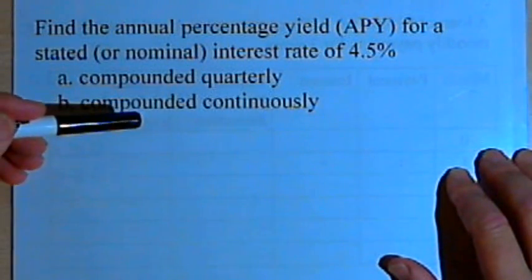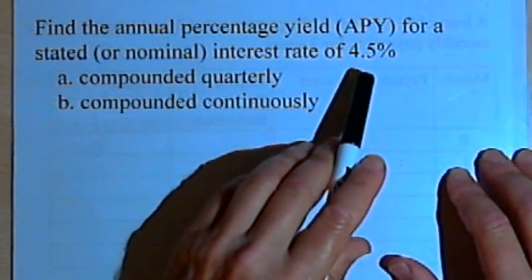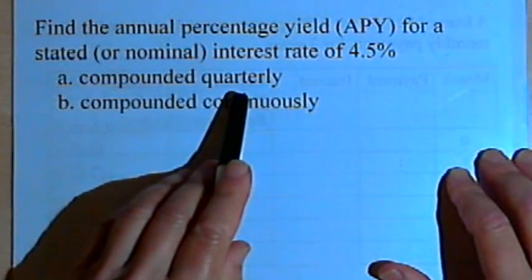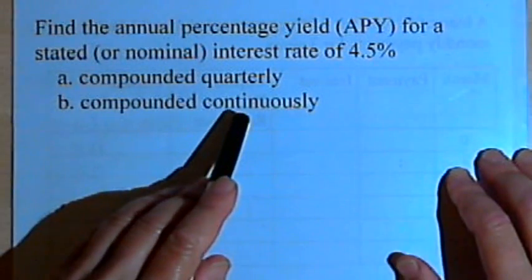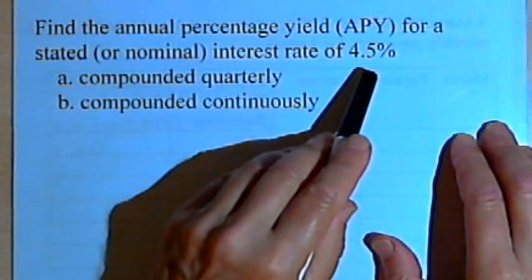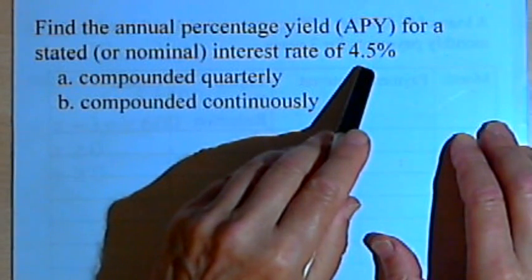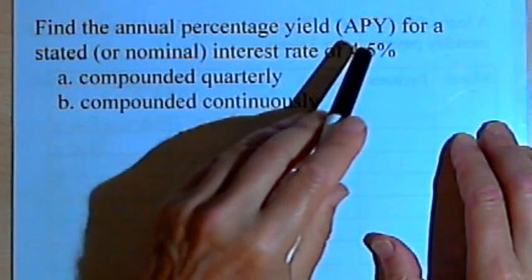If you put money into a bank and they pay 4.5% interest compounded quarterly or continuously, at the end of the year you would have earned a little bit more than that 4.5%. The amount you actually earned at the end of the year is the APY.